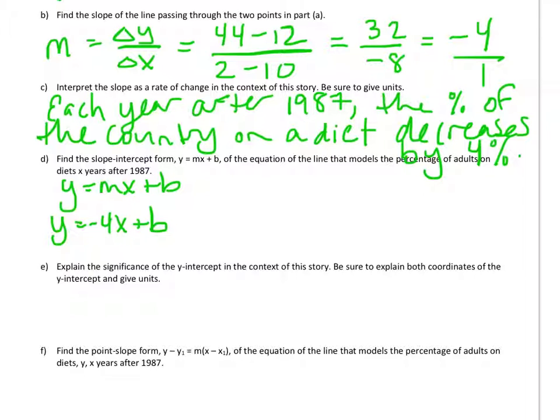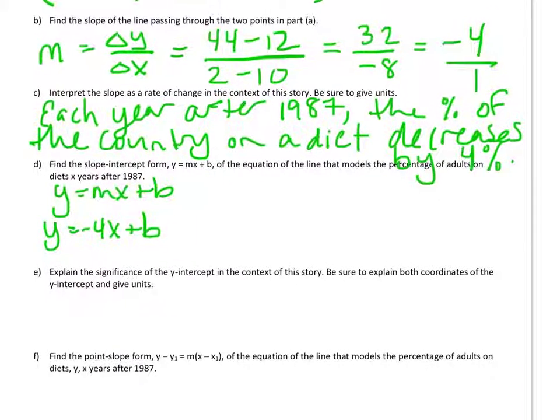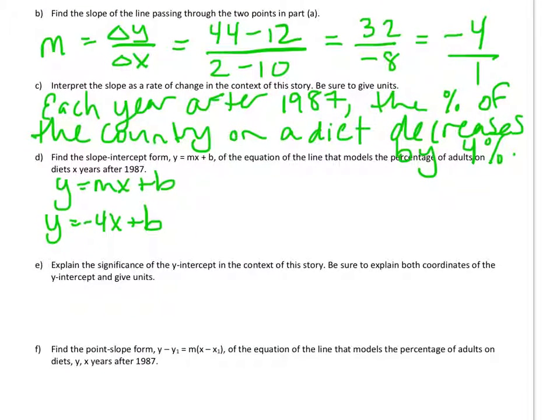So 10 was for 1997, 12% of the population is on a diet. So 10, 12. So the x coordinate is 10, so I'm going to put that in for x. So I have negative 4 times 10 plus b has to be 12. So I replace the x with the x coordinate of a point and y with the y coordinate of a point. And when I solve for b, I get 52.